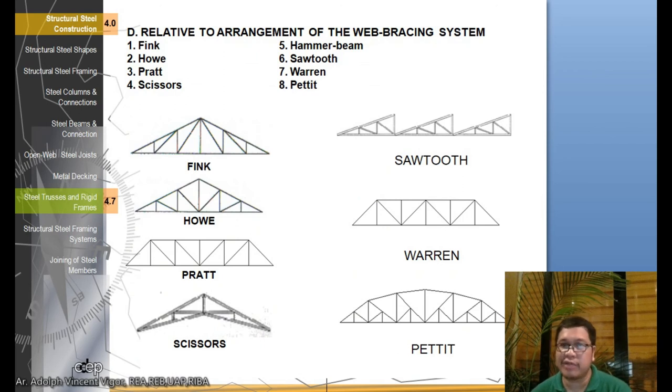Relative to the arrangement of the web bracing system, you have the Fink truss. Try to remember because some of these questions might come up in your board exam. This is the Howe truss. This is what you're really going to master in your method of joints. Howe truss is the easiest one to compute structurally. Then you have the Pratt, the scissors which we discussed earlier, the saw tooth, and the Warren truss which looks like the Carmen bridge.